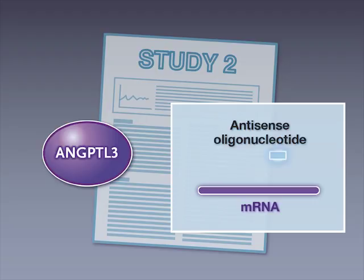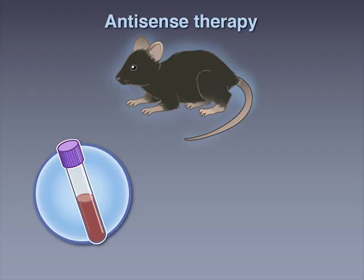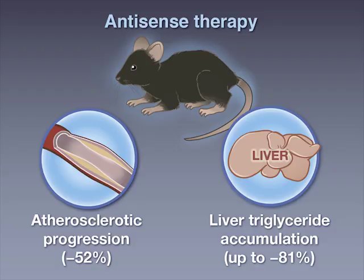In the second study, investigators reduced levels of angiopoietin-like 3 by targeting its messenger RNA with an antisense oligonucleotide. Mice treated with the antisense therapy had dose-dependent reductions in triglyceride levels, LDL cholesterol, liver triglyceride content, and atherosclerotic progression.